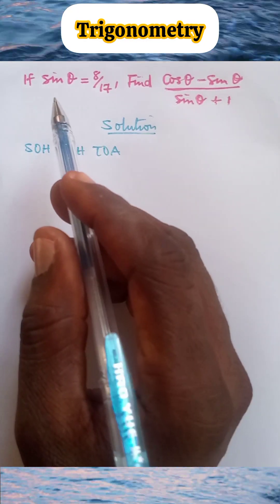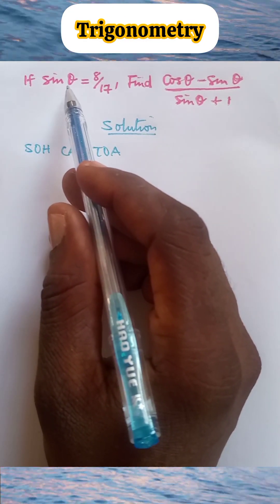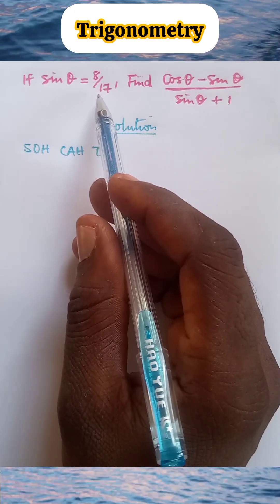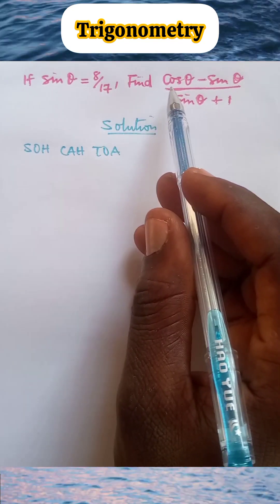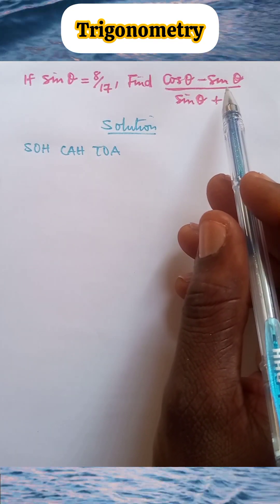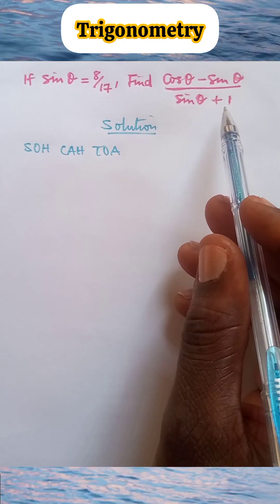We have a question here. If sin θ = 8/17, find (cos θ - sin θ)/(sin θ + 1).